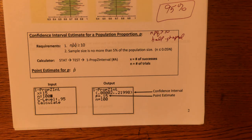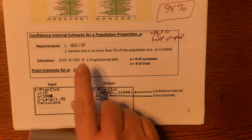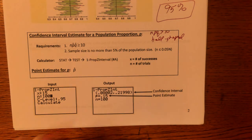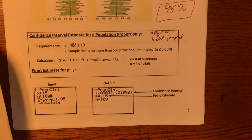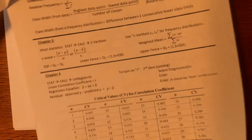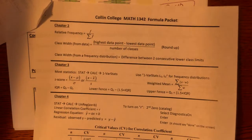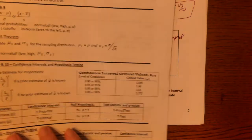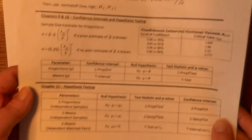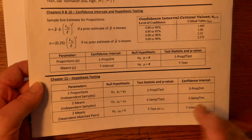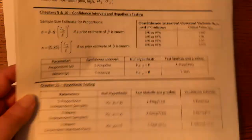Continuing our work with 9.1 confidence intervals on data about proportions. We talked about what the criteria are — let's grab our calculator, and also go ahead and grab your formula chart that we've been using, because I want to show you a couple of things in the chapter 9 section of our formula chart towards the end of this video.